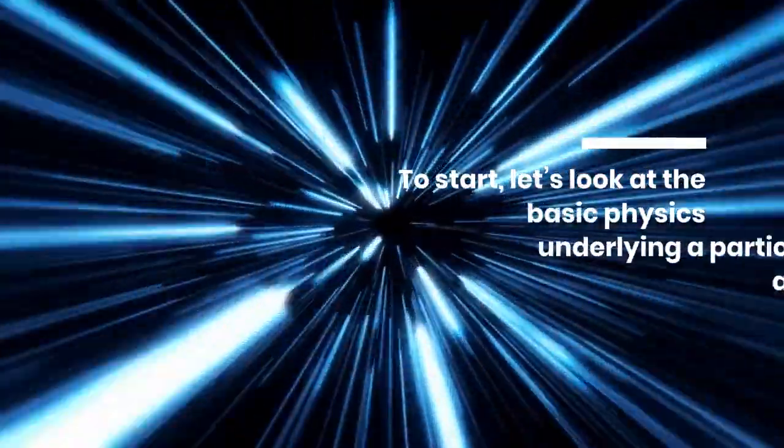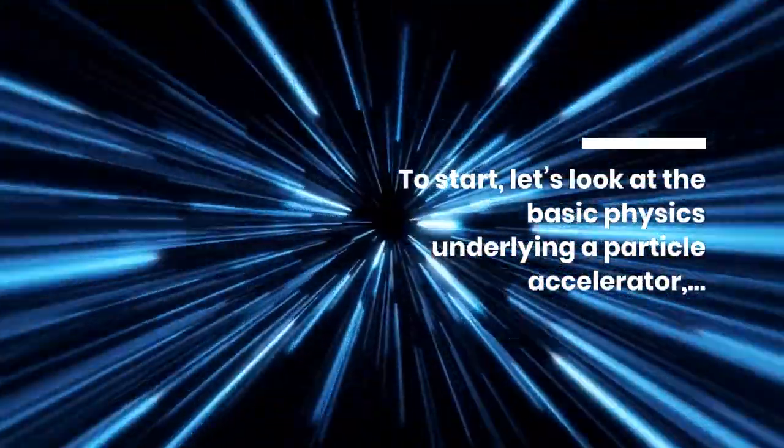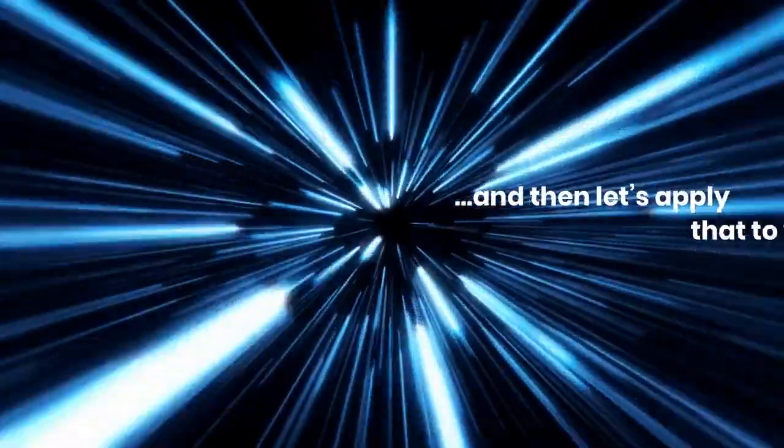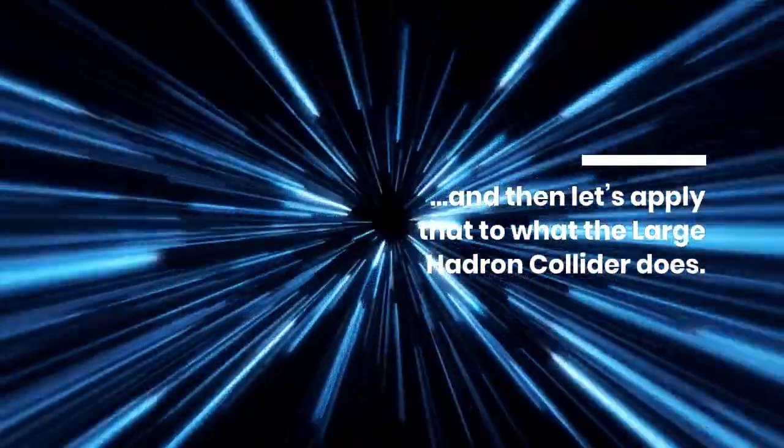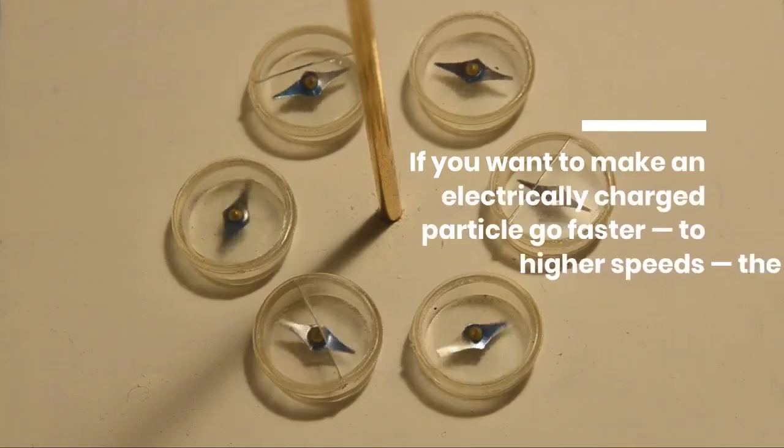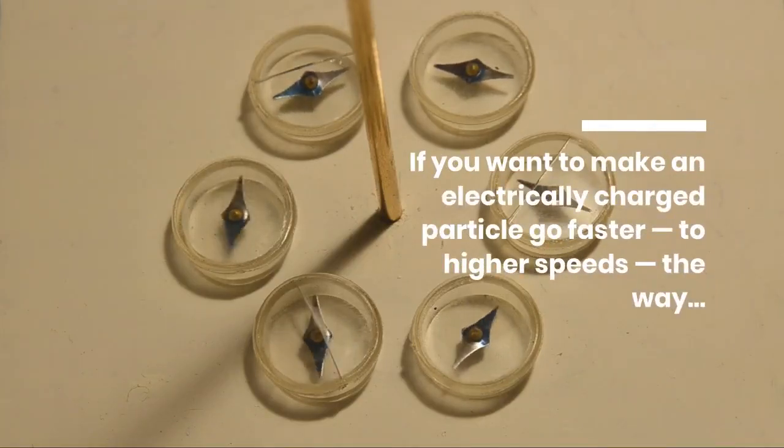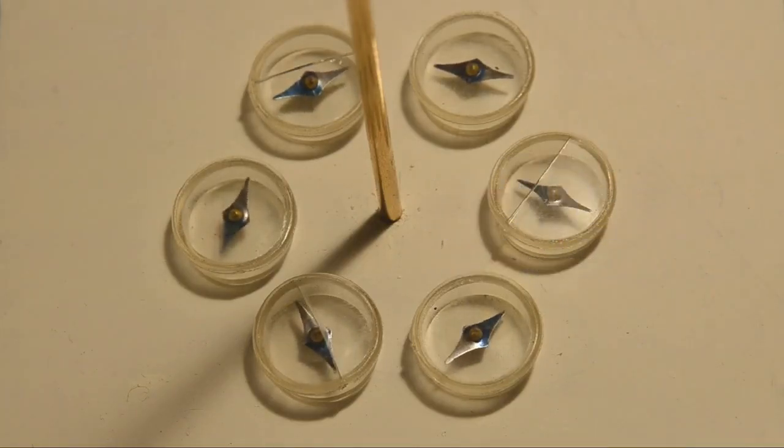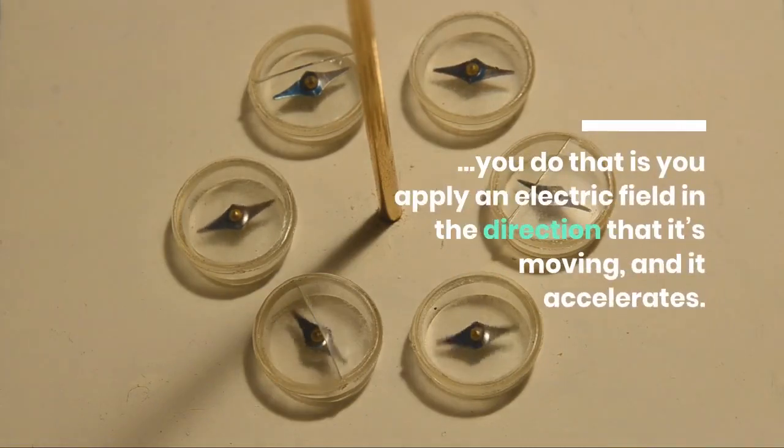To start, let's look at the basic physics underlying a particle accelerator, and then apply that to what the Large Hadron Collider does. If you want to make an electrically charged particle go faster, to higher speeds, you apply an electric field in the direction that it's moving, and it accelerates.